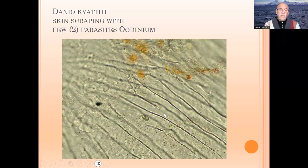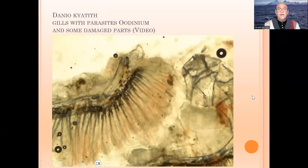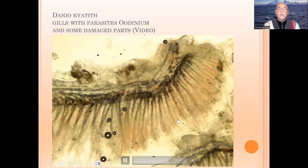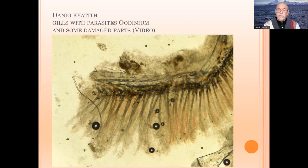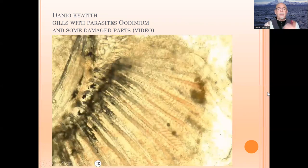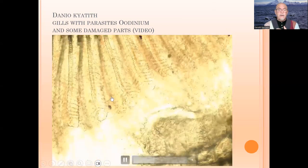We took a scraping and found only two odinium parasites on the skin — here is one, and here is one. In the gills we found more; in this particular gill we found three. Here I show you the video where I observed the full gill arch — you see all the black spots, which are all odinium parasites. Those round things are air bubbles. You can also see the damaged tissue, which may be caused by the parasites, because parasites create small lesions where bacteria can intrude and create a secondary bacterial infection.